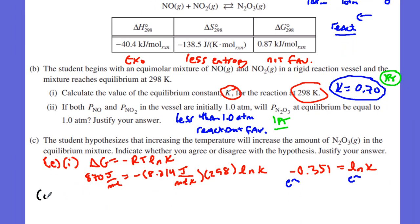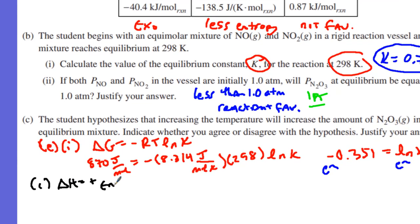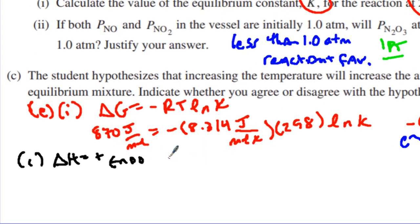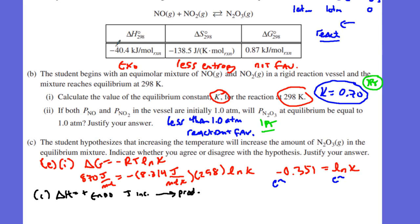Then we go to Part C. It says a student hypothesizes that an increase in temperature will increase the amount of N2O3. Indicate whether you agree or disagree. If the delta H is positive and endothermic, think about Le Chatelier's—when temperatures increase, it's going to shift to the products, or the N2O3 would increase. But take a look at the delta H. The delta H is a negative value. It's exothermic.